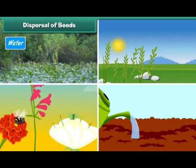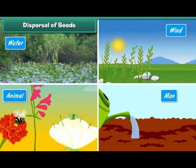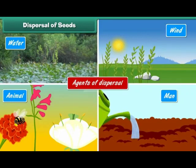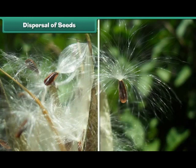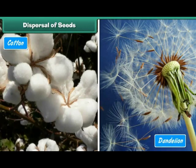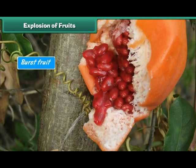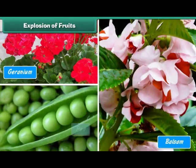Seeds are dispersed by water, wind, animals, and even humans — these are known as agents of dispersal. Seeds which are light in weight and have wings or feathers are dispersed by wind; examples include cotton, dandelion, and maple. Some fruits, when ripe or dry, burst open and their seeds are thrown away — this process is known as explosion of fruits; examples include geranium, balsam, and pea.